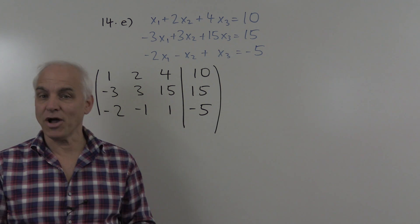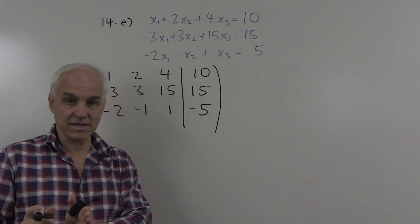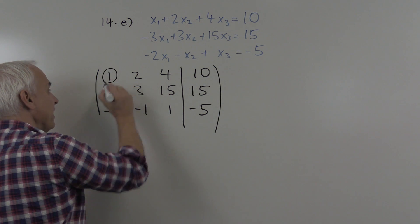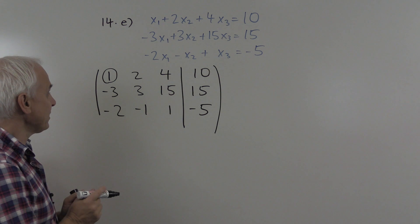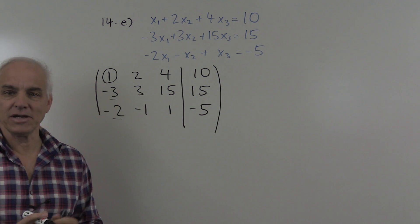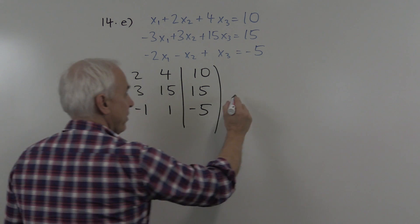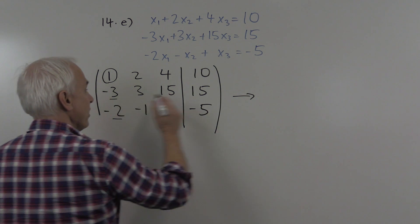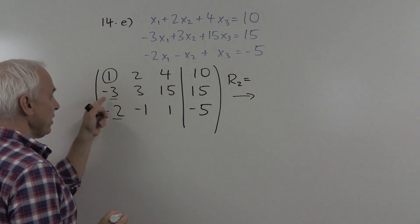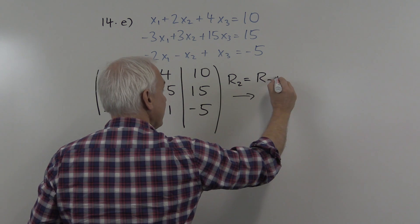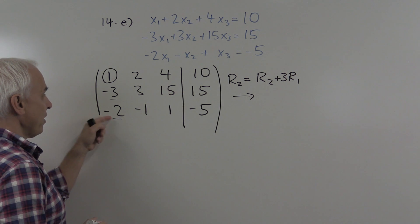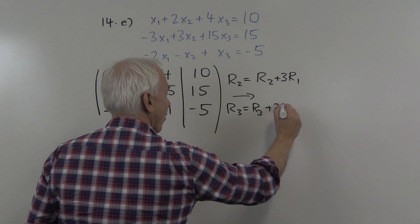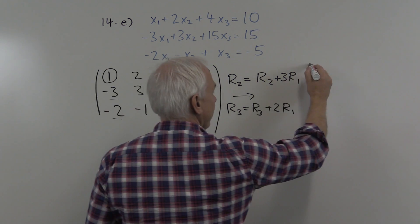Now we're going to perform row reduction on this to get it into a row echelon form. That's a particularly simple form which will allow us to read off solutions. We'll start with this top left hand entry called a pivot entry and we're going to use that to get rid of the entries below it in its column. The way we're going to do that is we're going to add or subtract multiples of that first row to the second and third rows. What are we going to get?